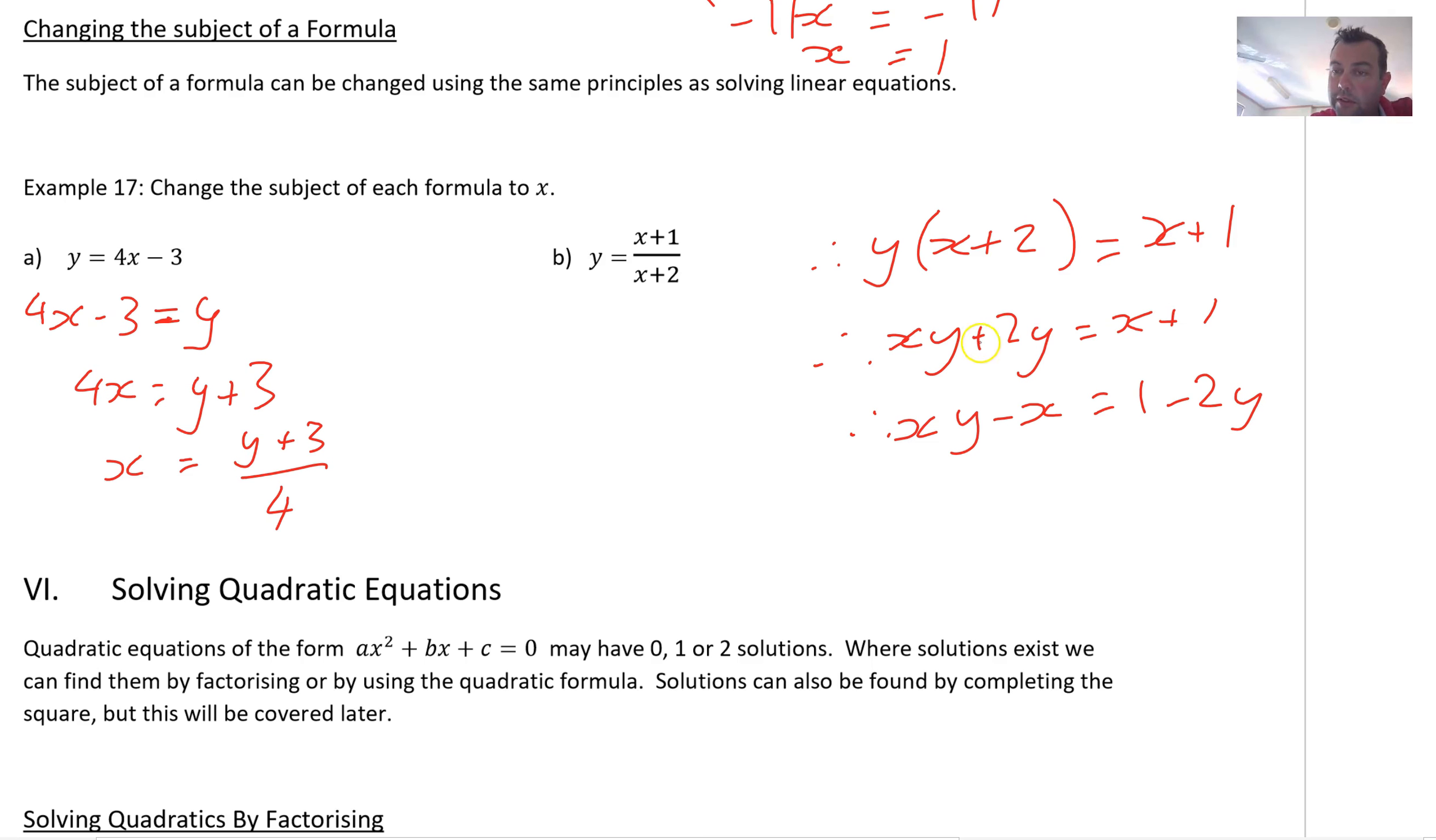Is that okay? Brought the x over. Subtracted 2y from both sides. Now, I'm going to factorise this a little bit. I'm going to say, x outside of y minus 1 equals 1 minus 2y. Now, I divide by the y minus 1, and I get x equals 1 minus 2y over y minus 1.